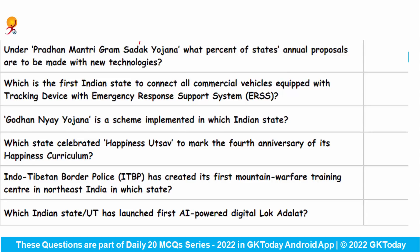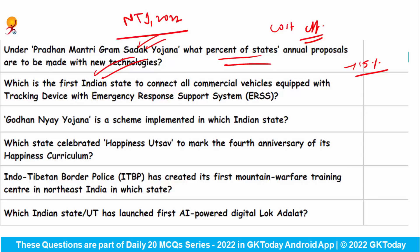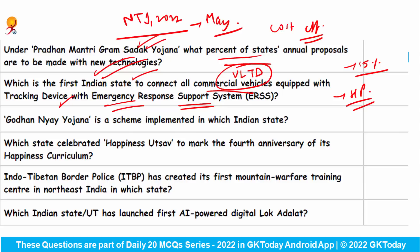Under Pradhan Mantri Gram Sadak Yojana, what percentage of the state's annual proposals are to be made with new technologies? Commercial vehicles are to be equipped with tracking devices with an emergency response support system. Himachal Pradesh became the first state to connect all commercial vehicles equipped with Vehicle Location Tracking Devices to the emergency response support system. These vehicles can be tracked anywhere in the country through VLTD by the Police and Transport Department.